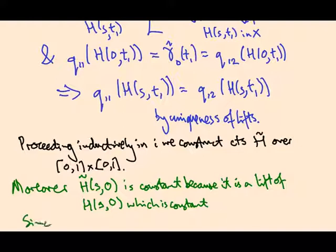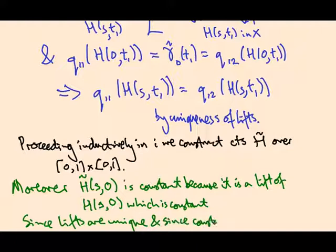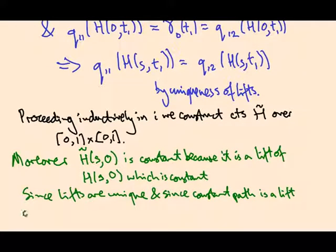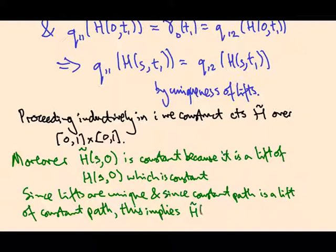So since lifts are unique and since the constant lift is a lift of the constant path, this implies that h tilde(s, 0) is constant itself. Similarly for h(s, 1). Okay, so that proves that it's a homotopy relative endpoints.